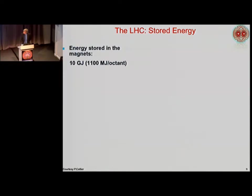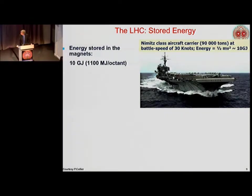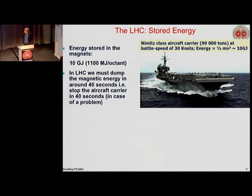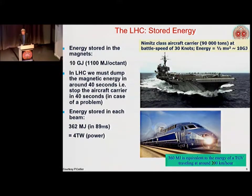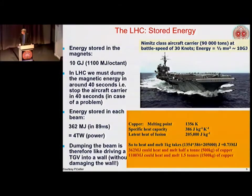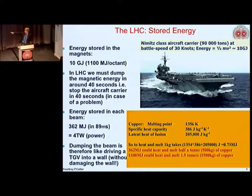The stored energy is huge. To keep 7 TeV particles in a circle, you need very strong magnets. The magnetic field itself stores energy — 10 gigajoules in the magnets, which is the same as the kinetic energy of a fast-moving aircraft carrier, just sitting there. The energy stored in each beam itself is equivalent in power terms to 4 terawatts — the same as a TGV train — all stored in a very long, thin beam.